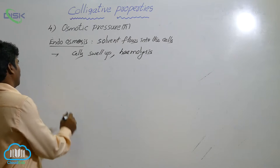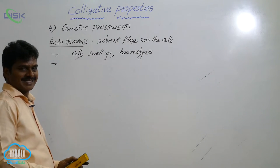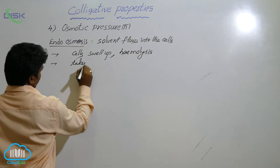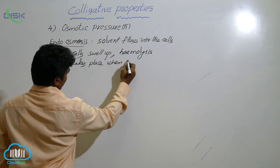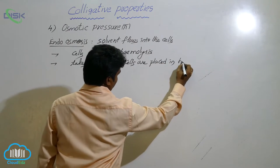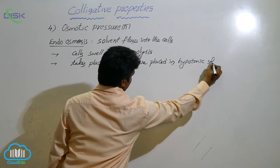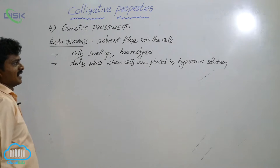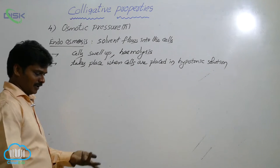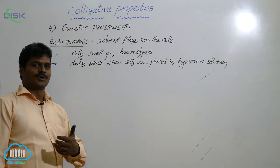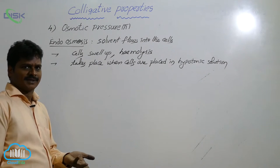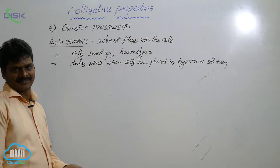Endosmosis takes place when cells are placed in a hypotonic solution. For example, take some grapes and place them in pure water. After 2-3 hours, their size will increase. In grapes, the outer skin acts as a semi-permeable membrane (SPM). The fluid inside the grape is highly concentrated, while pure water outside is less concentrated.